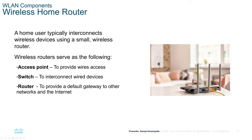It acts as an access point because it provides wireless access. It provides switching capabilities to interconnect devices and allow packet switching inside the device. It also acts as a router to provide a default gateway to other networks and the internet. So the wireless routers at home provided by your ISP have three functions built in: access point, switch, and router.